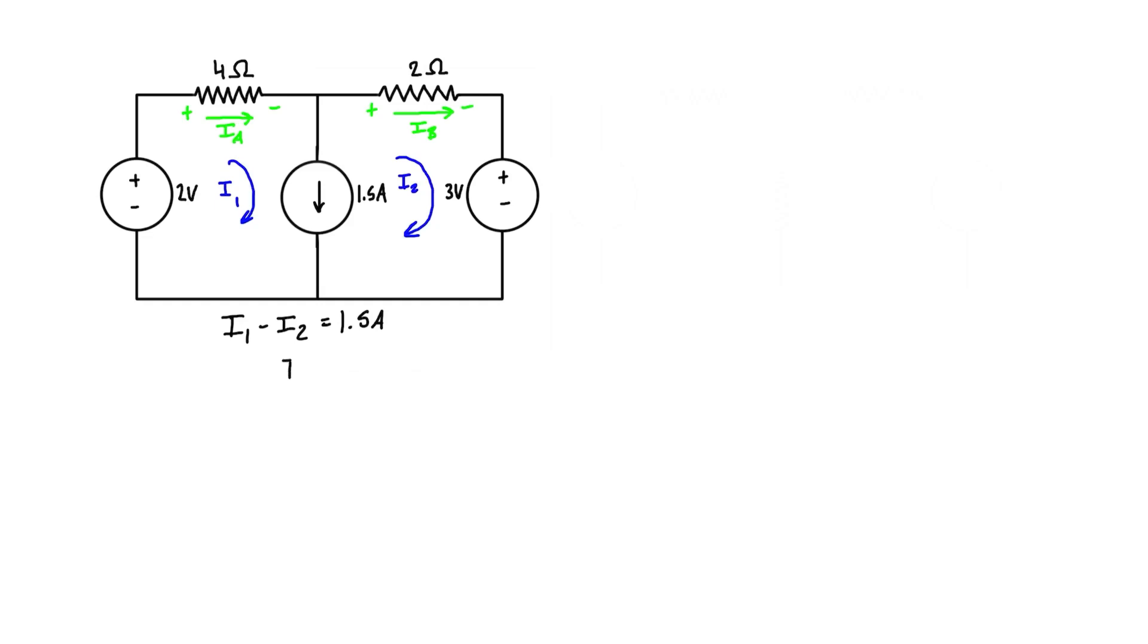And we can just rearrange this if we want. So we have I1 is equal to 1.5 plus I2, just to get it in terms of one of the variables. So this is our first equation. And we need two equations because we have two unknowns. The two unknowns are our mesh currents, I1 and I2.